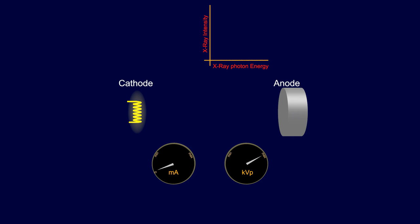In this animation, the MA, or milliamperage, is increased and the KVP is fixed. This animation illustrates how changing milliamperage changes the X-ray intensity.